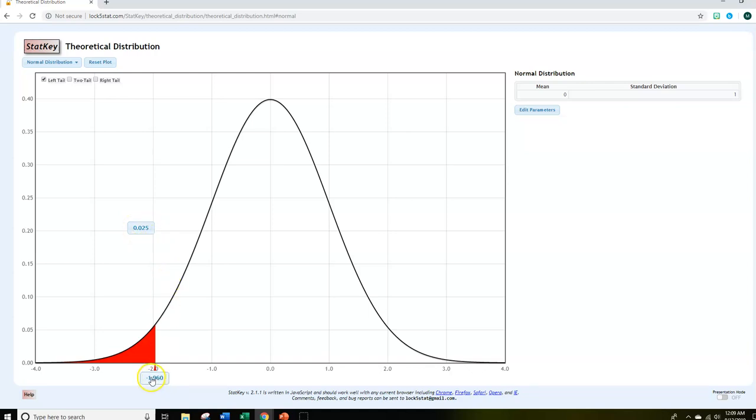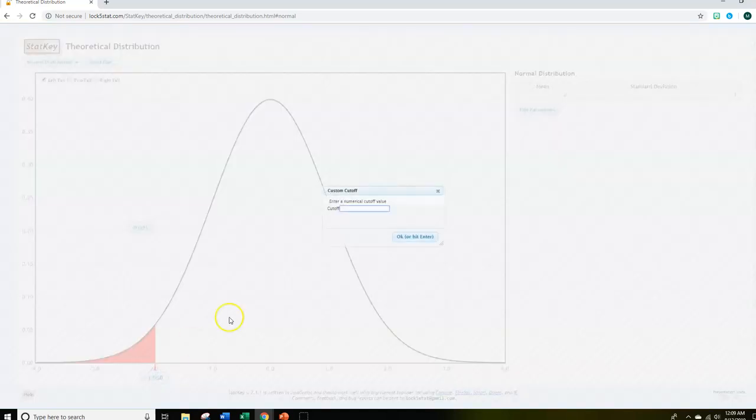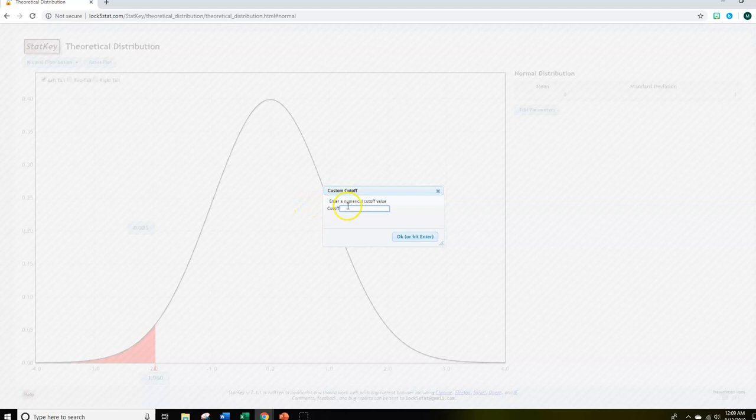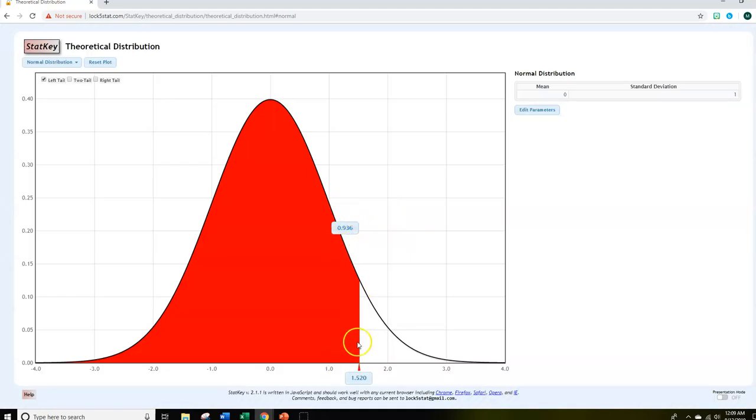I could come down here, click my mouse on top of that number, just left click it. And then it lets me give my own cutoff value. And that's where I could put in 1.52. Hit OK, and it's going to give me the probability below a Z-score of 1.52. There it is, 0.936.